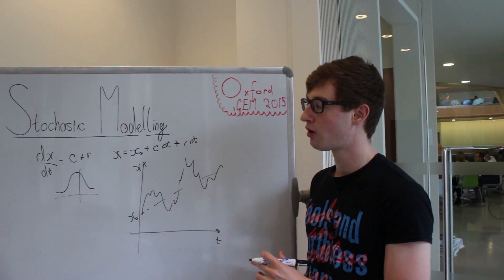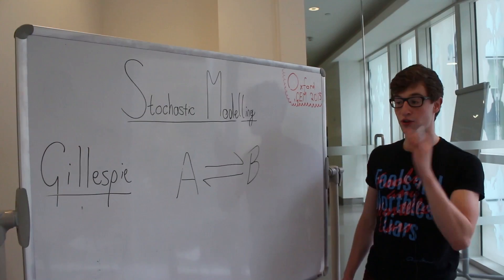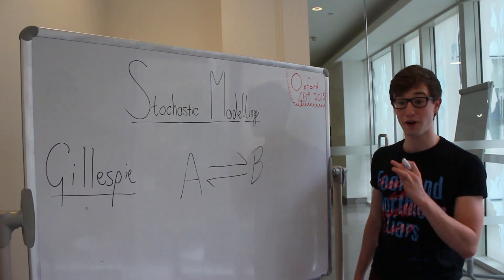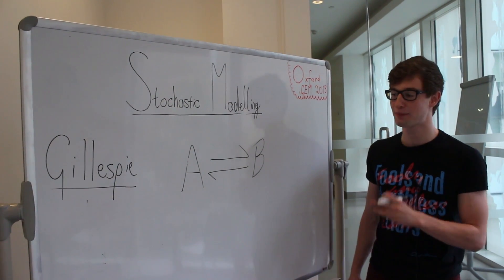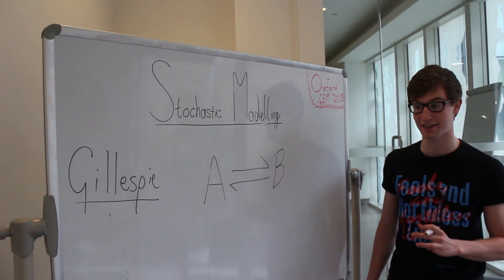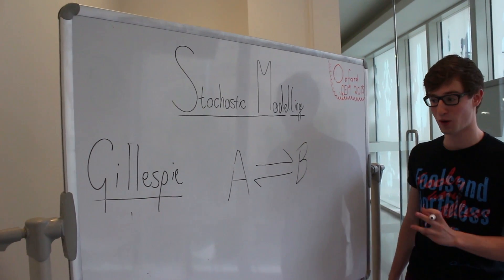That's the simplest possible model we could do, but we could go a little bit further than this and deal with systems which involve different species of particles that evolve into one another. So another method we can look at which is very popular in biological systems is the Gillespie algorithm.